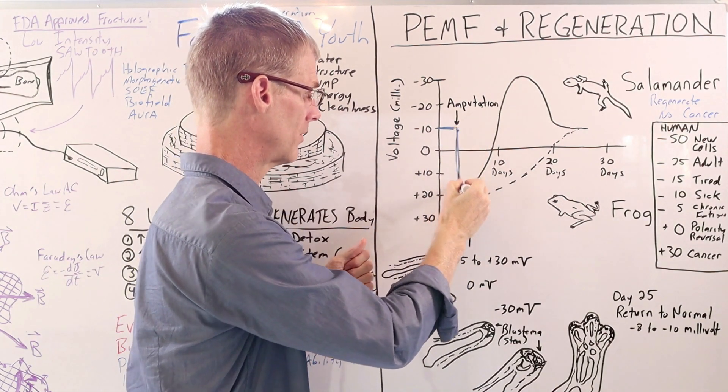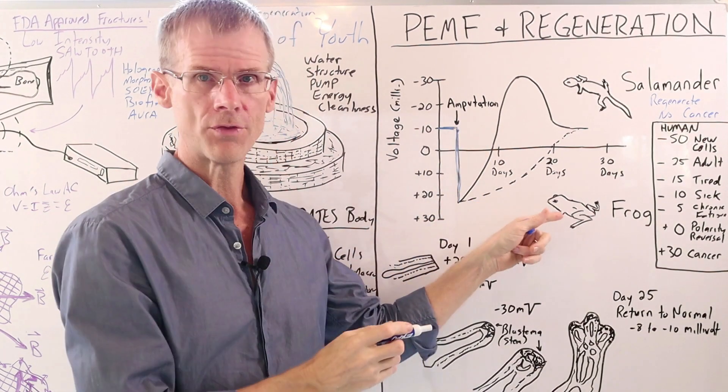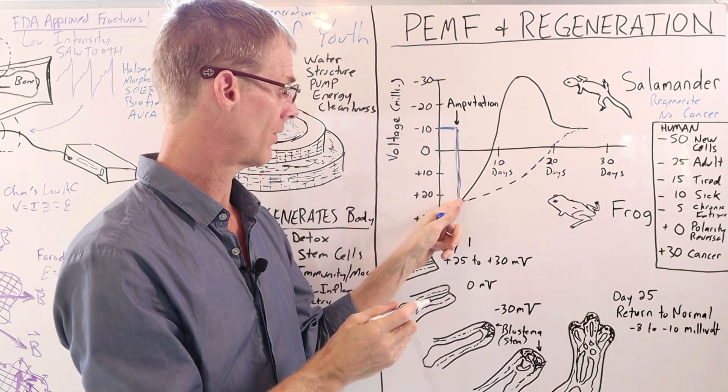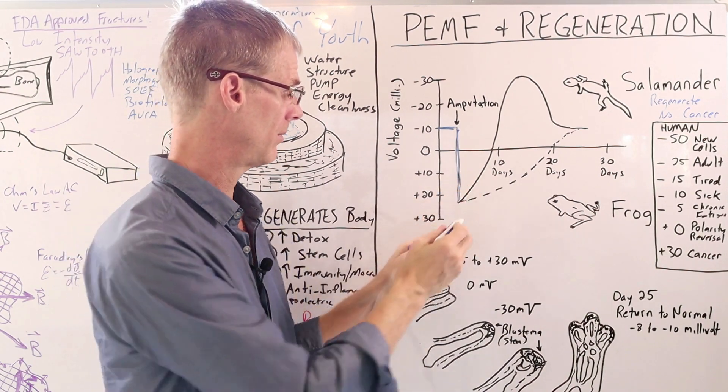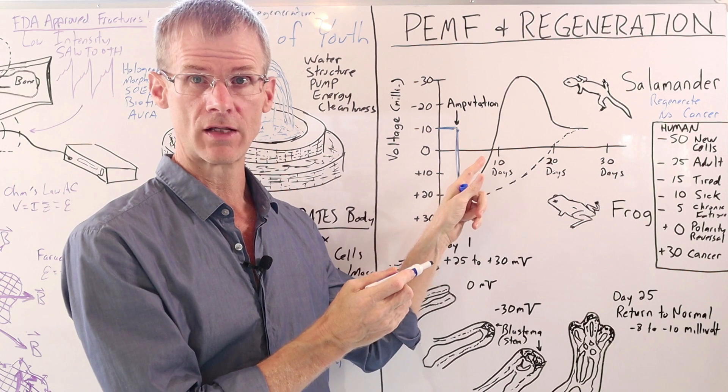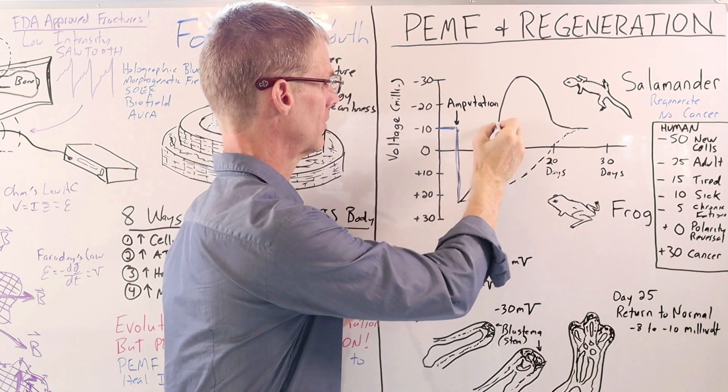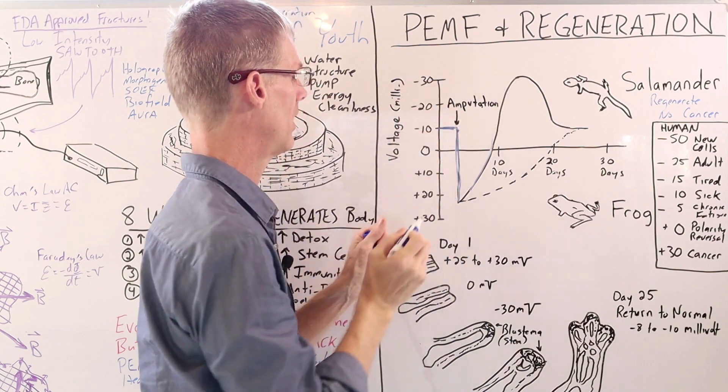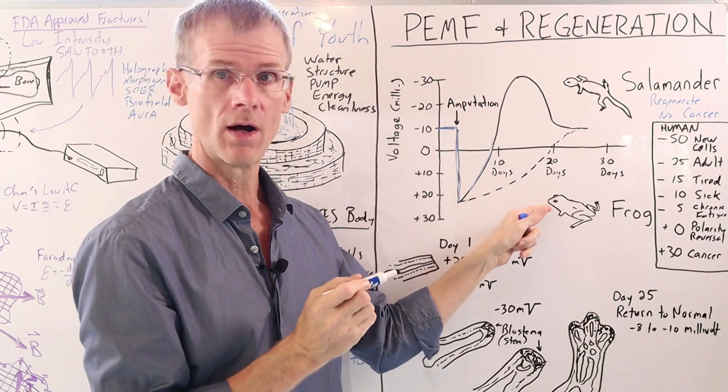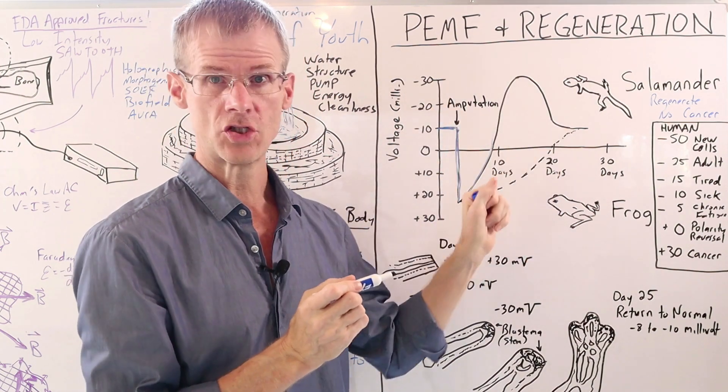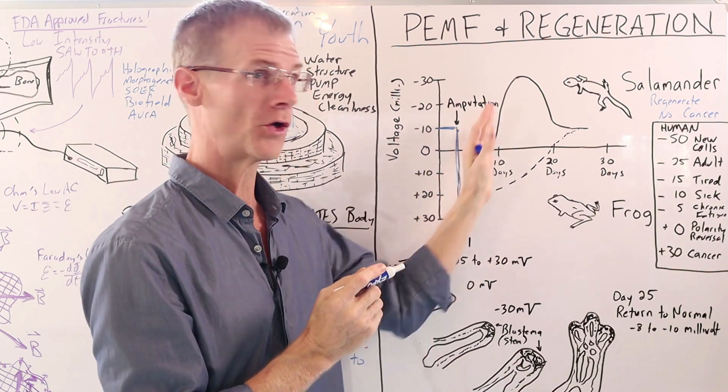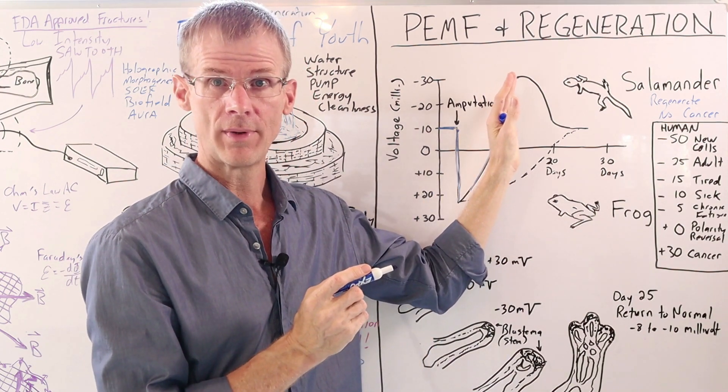There was an initial drop in voltage. And then with both the frog and the salamander, that happened. So then gradually over time, the voltage started to rise, but it rose a lot faster with salamanders. And what's interesting is that there was a polarity reversal where the voltage went way up to minus 30 millivolts, where the frog did not get such a change in voltage, meaning there was a surge of energy into the salamander's stump.